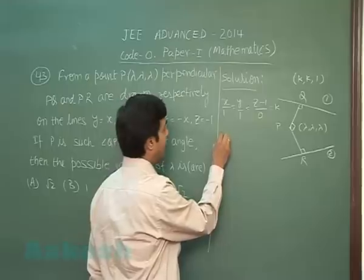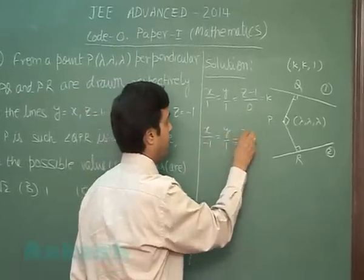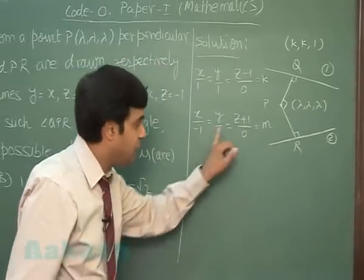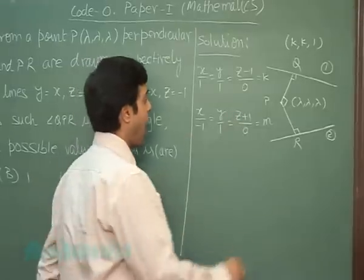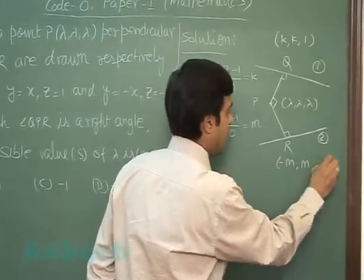Similarly, other line is this one, say equal to m. From here we can get a general point, say R(-m, m, -1).